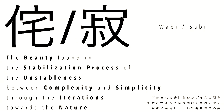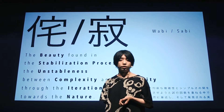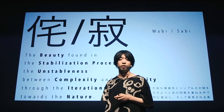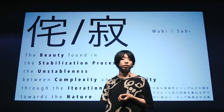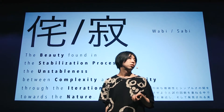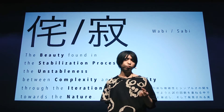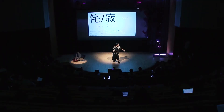I'd like to define wabi-sabi, the Japanese ancient beauty concept, towards a recent concept. I call it the beauty found in the stabilizing process between unstableness — between complexity and simplicity — through iteration towards nature. In ancient Japan, we put artifacts into the garden or placed materials into containers, and after that we found beautiful china and such things.